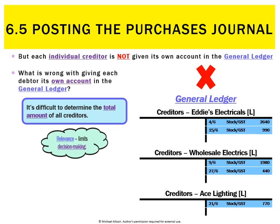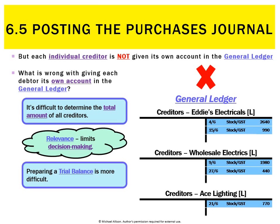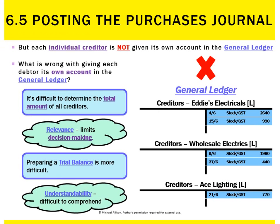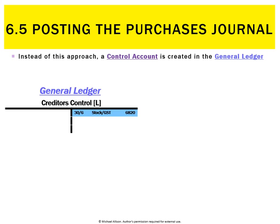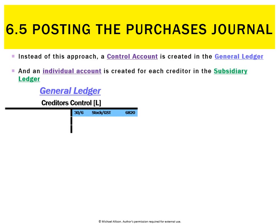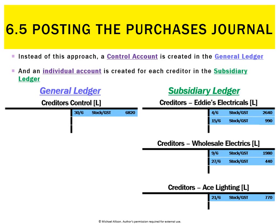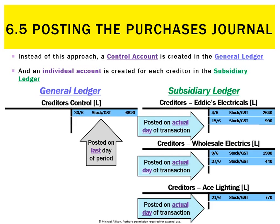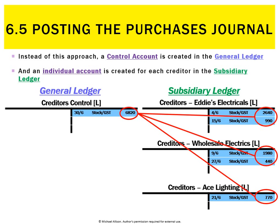Having a separate ledger for each creditor would make it difficult to determine the total of all creditors, making decision-making difficult — going back to relevance. It would also make a trial balance and balance sheet difficult, which affects understandability. So instead, in the general ledger we have one giant entry to the creditors control account for 6820, and then we create an individual account in the subsidiary ledger for each creditor. In the general ledger we always post on the last day of the period, but in the subsidiary ledger we post on the date of each individual transaction.